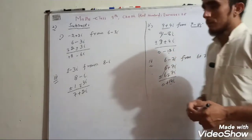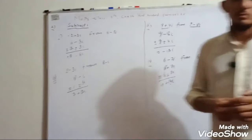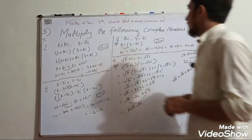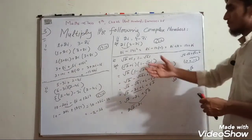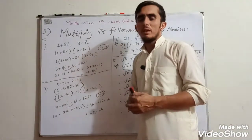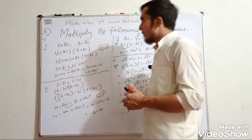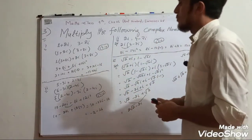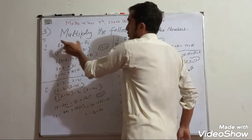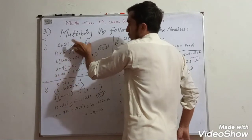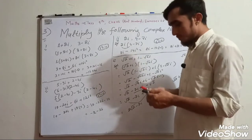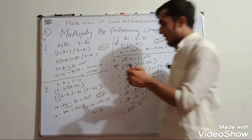Question number 3: multiply the following complex numbers. Multiply 1 plus 2 iota by 3 minus 8 iota, using the multiplication method.